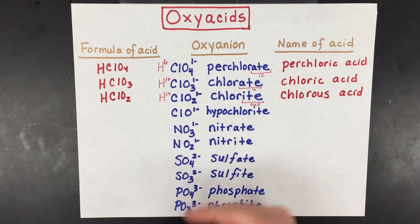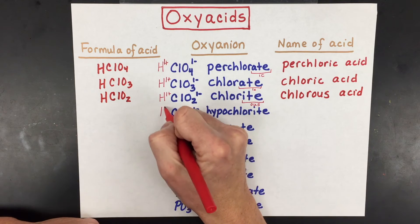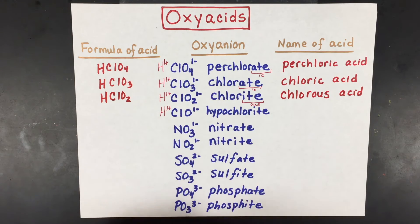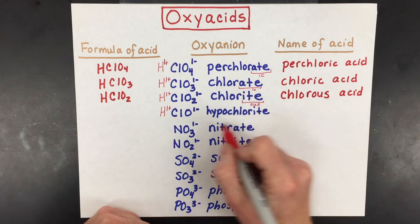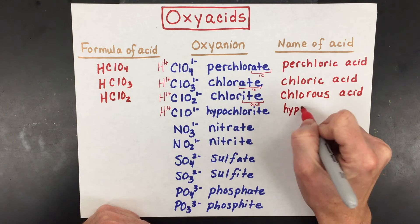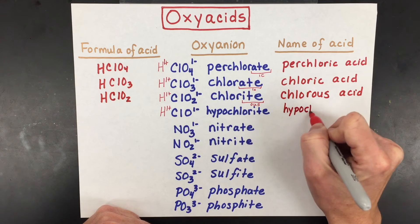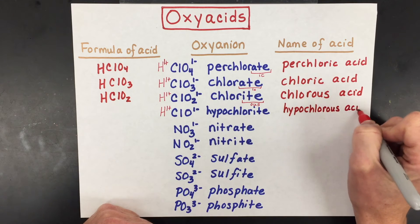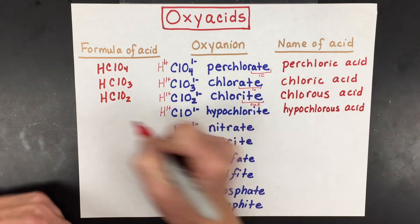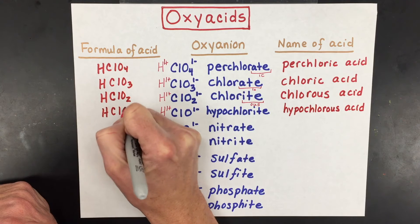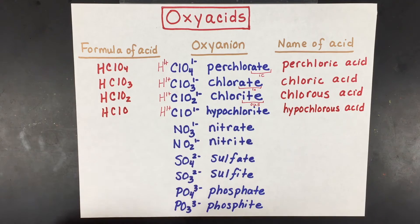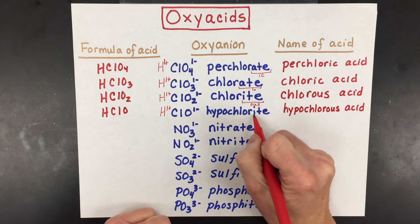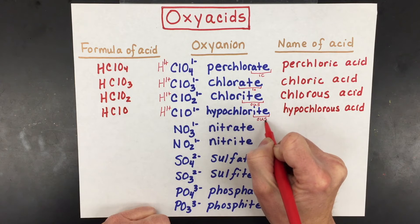The last chlorine-containing oxygen anion here is the hypochlorite ion. Again, to make it an acid you add the hydrogen ion, so you end up with hypochlorous acid, and the formula is HClO. One more time: 'ite' turns into 'ous'.